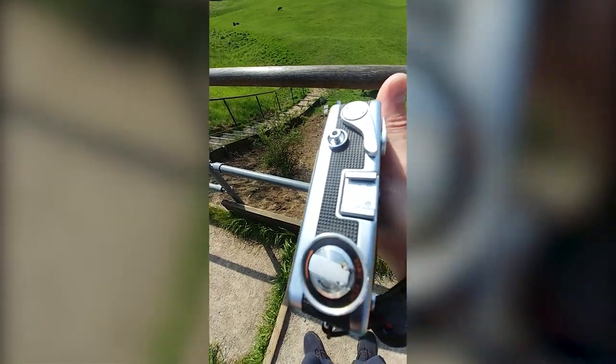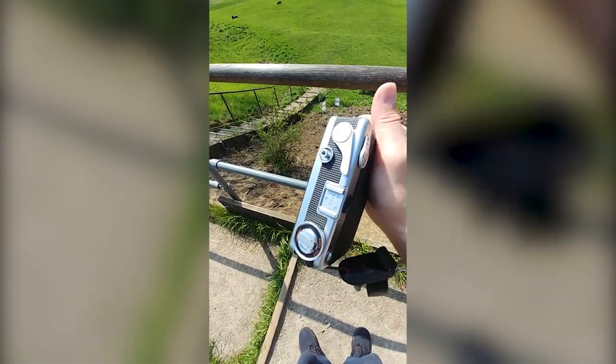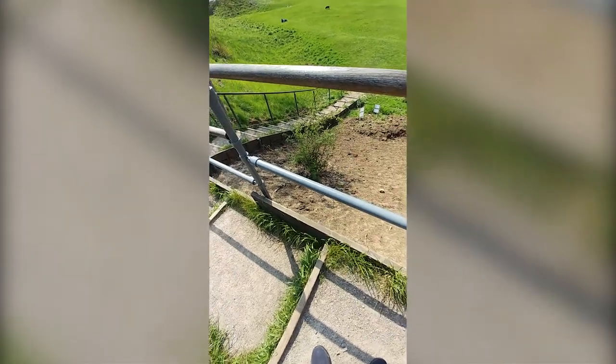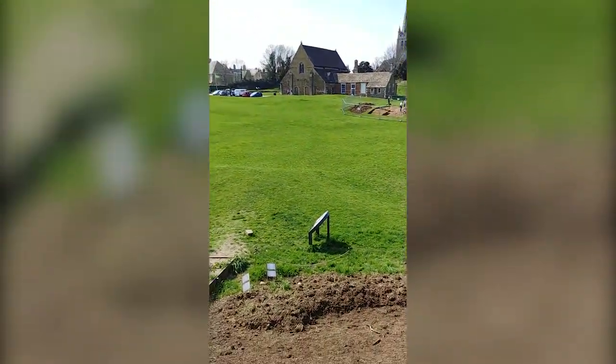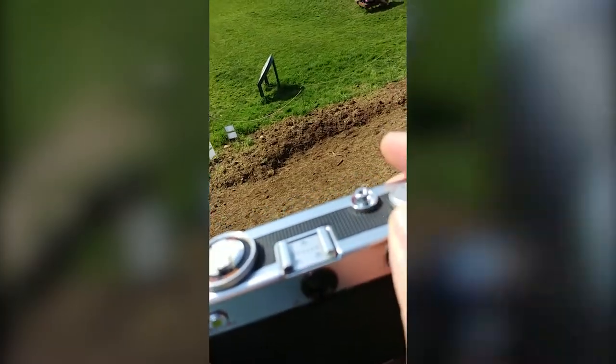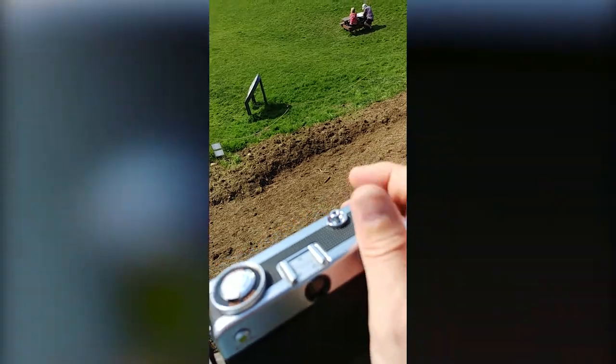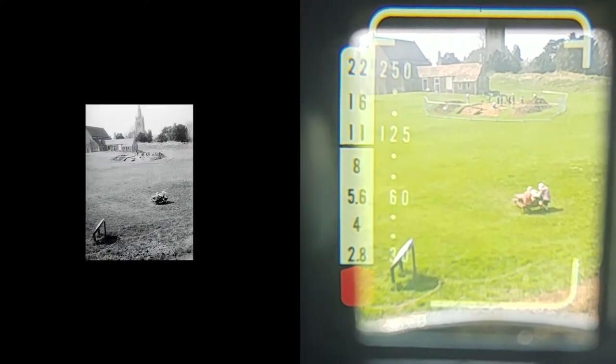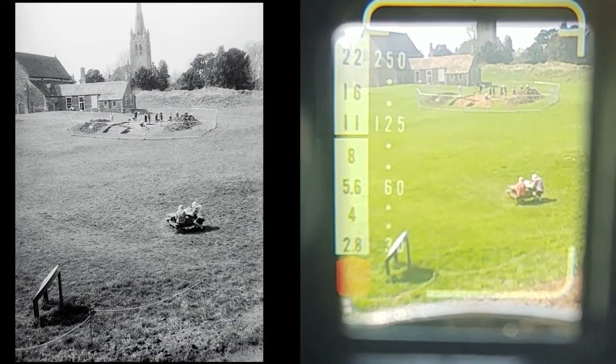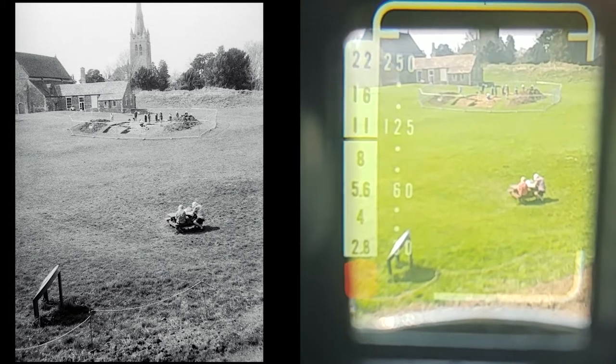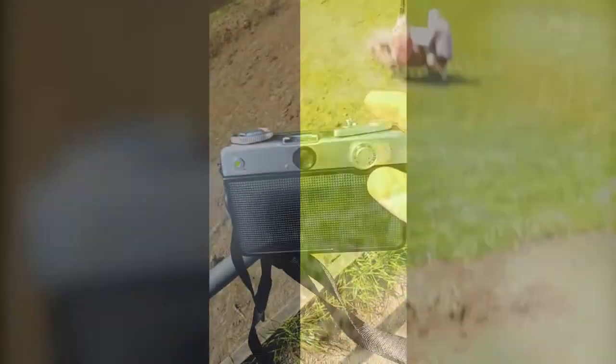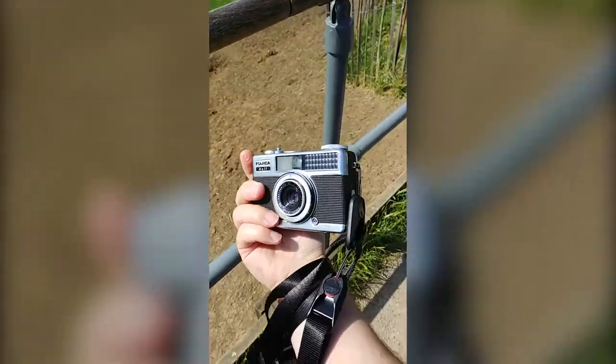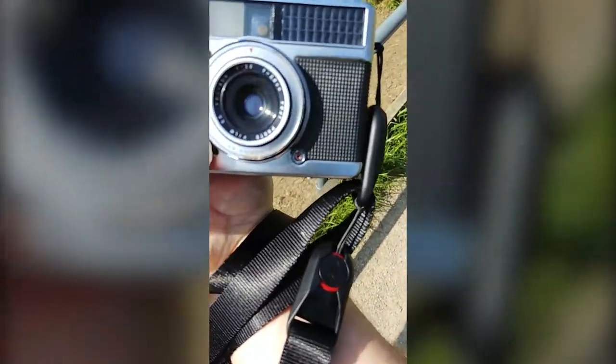I'll show you what it looks like through the viewfinder. It is actually quite a reasonable viewfinder for a camera of this type. Here's the shot we're going to take. As you can see, it's not a bad viewfinder. You need to look over to tell what F number and shutter speed it's going to use. So we'll take a few more shots around here and just see how it goes.